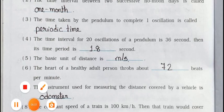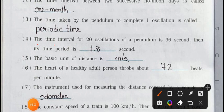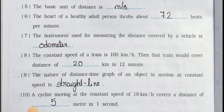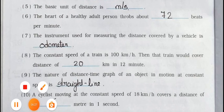Number four: the time interval for 20 oscillations of a pendulum is 36 seconds, then its time period is 1.8 seconds. Number five: the basic unit of distance is meter. Number six: the heart of a healthy adult person throbs about 72 beats per minute.